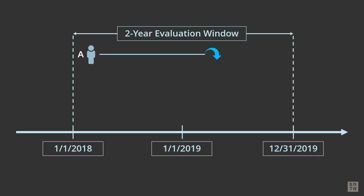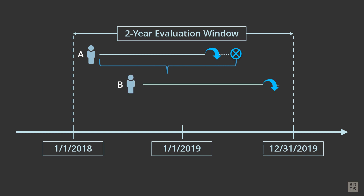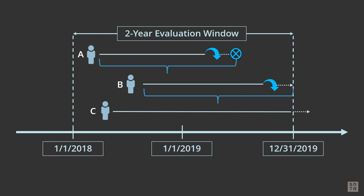Patient A was listed, then removed for being too sick, and died within the observation period — person time accrues from Patient A's list date to death. Patient B was listed and removed for being too sick within the observation period — person time still accrues from the list date to the end of the period for this observation period. Patient C was listed and was on the list at the end of the observation period — person years accrue from the list date to the end of the period.